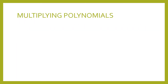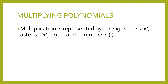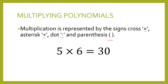We start with multiplying polynomials. As we all know, multiplication can be represented by the signs cross, asterisk, dot, or parenthesis. Now if we are given the equation 5 times 6 is equal to 30, we call 5 the multiplicand, 6 is called the multiplier, and the answer is called the product. So that is just a review.